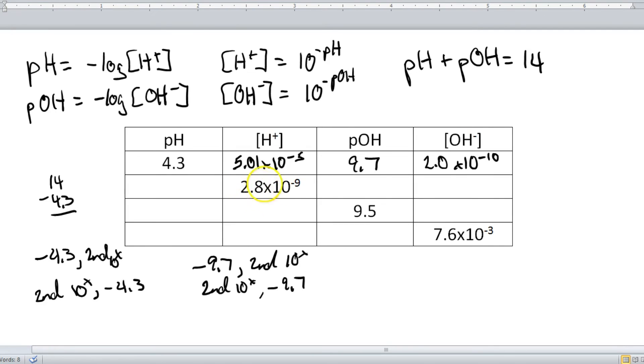So here we're starting with a hydrogen concentration of 2.8 times 10 to the negative 9th power. So I'm going to use this equation right here using the actual log button. So if your calculator requires the number first,